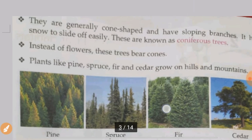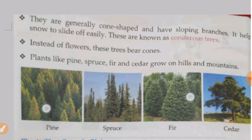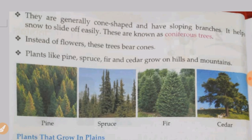They are generally cone-shaped and they have sloping branches. This helps snow to slide off easily — when snow falls on the trees, it slides and falls off easily. These trees are known as conifers, or coniferous trees.